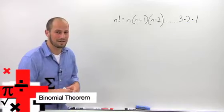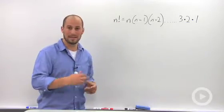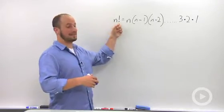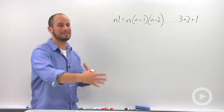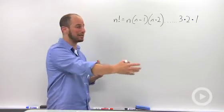Factorials are a different way of writing a product, a series of multiplications. Factorial is basically an exclamation point. So whenever you see something with an exclamation point, you don't have to yell it out, you just have to multiply it by everything below it.